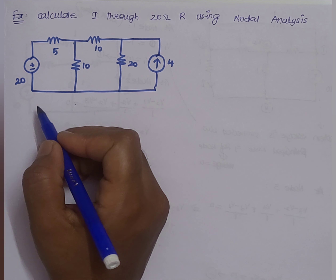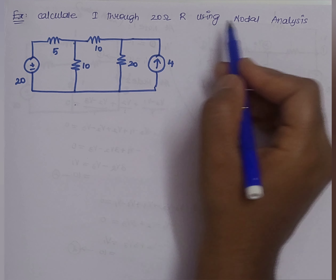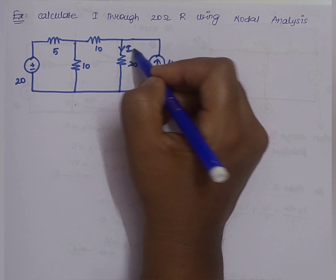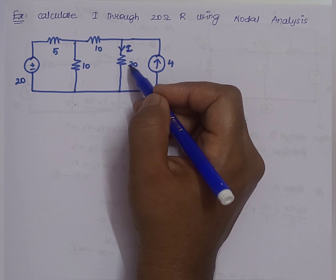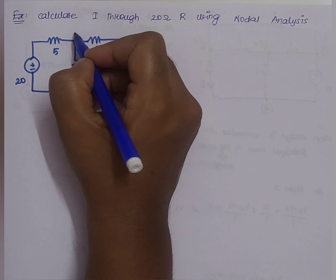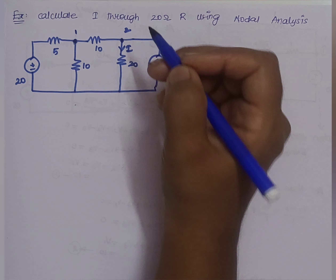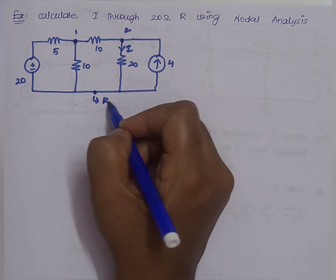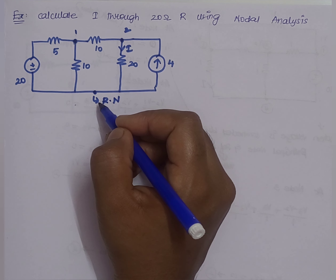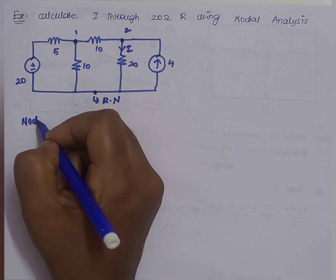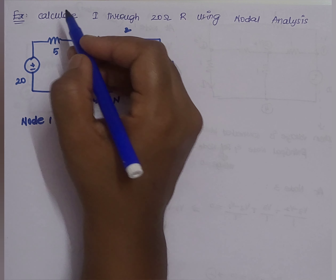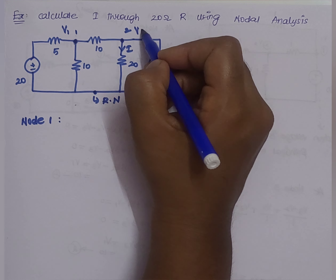Now let us solve the second example: calculate the current through the 20-ohm resistor using nodal analysis. The first step is to identify the number of nodes. The first node is here, the second node is here, and the third node is the reference node where voltage equals zero.